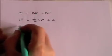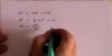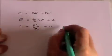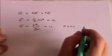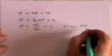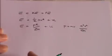We can also write half mv squared as p squared over 2m plus u, because you may recall that p is mv, and therefore p squared is m squared v squared, and if you divide that by 2m, you get half mv squared.